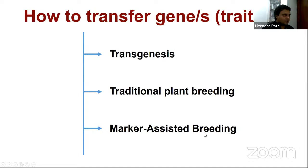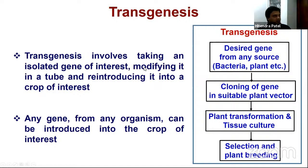What is transgenesis? Transgenesis involves taking an isolated gene of interest — it could be from any source, from bacteria, from plants — and then we can modify it in a tube and reintroduce it into a crop of interest. This is called transgenesis. The source of the gene can be from any organism, and it can be introduced into any crop of interest.